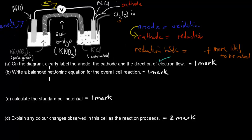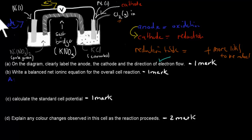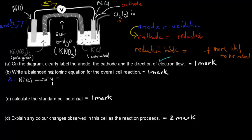Part B asks for a balanced net ionic equation for the overall cell reaction. First, write the anode half-equation: nickel is oxidized, losing two electrons. So nickel solid becomes Ni²⁺ ions and releases two electrons: Ni(s) → Ni²⁺(aq) + 2e⁻.